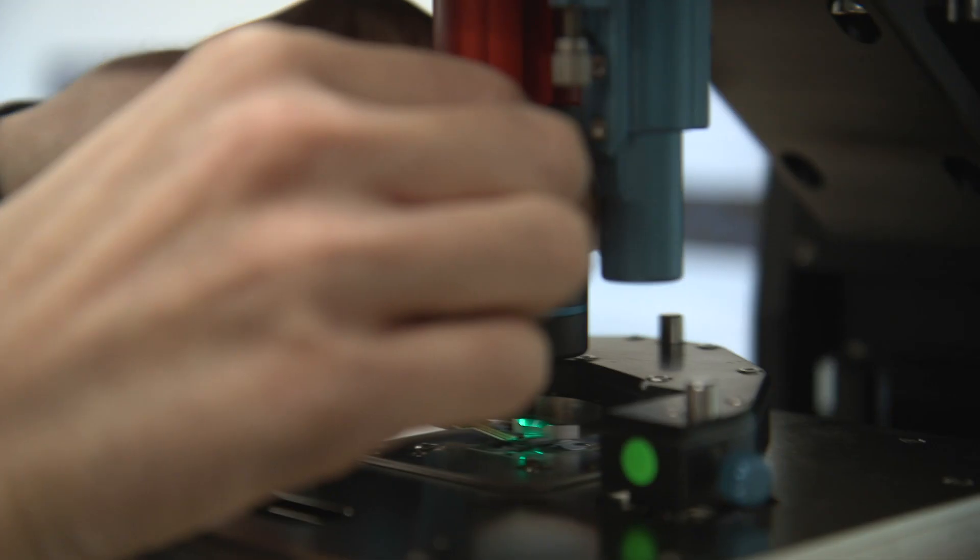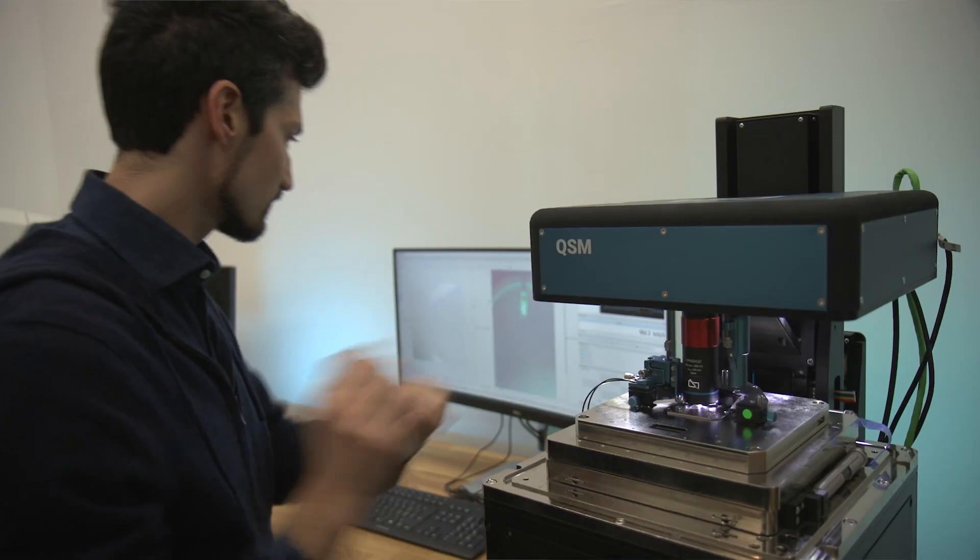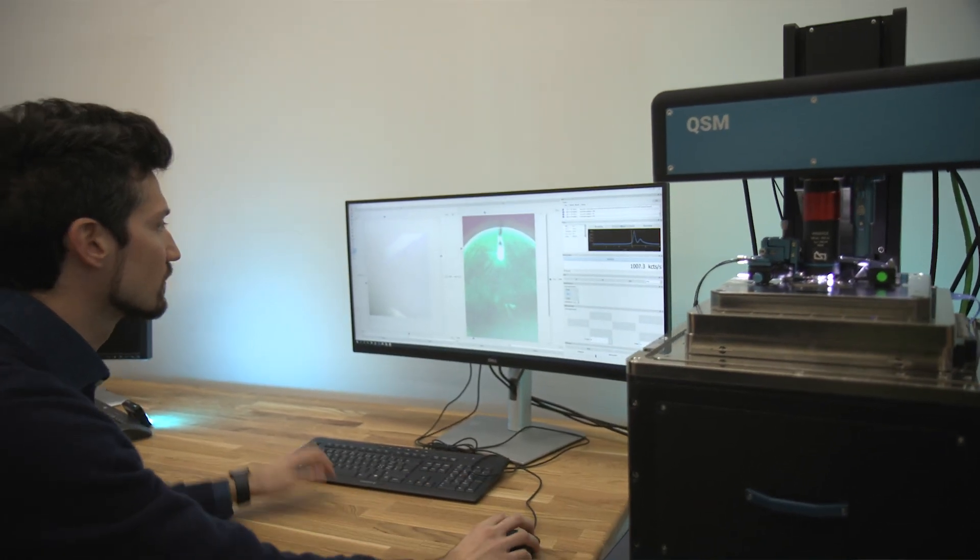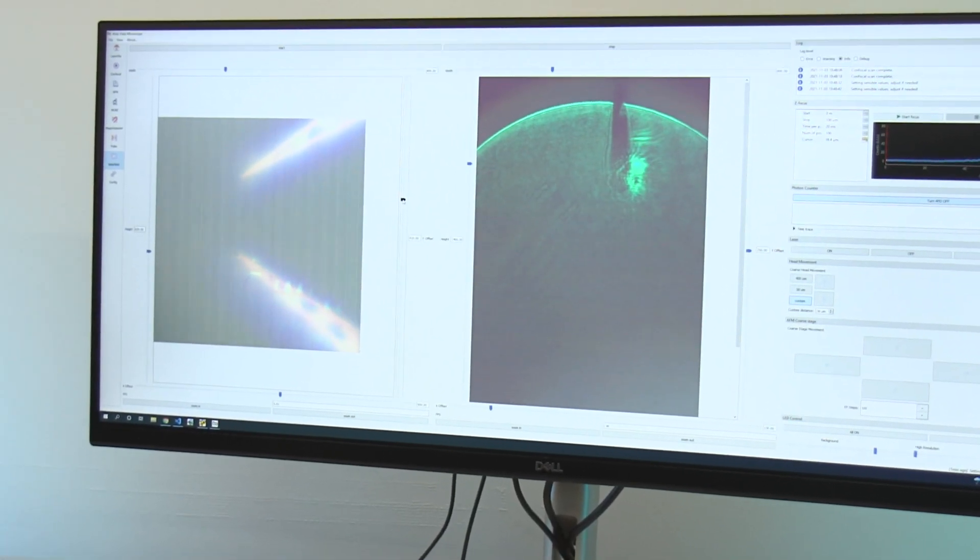Another unique feature of the QSM is really the optics set. We have put a lot of engineering and thought into designing custom optical elements that can maximize the collection efficiency of the fluorescence from the sensor itself. This impacts signal-to-noise that affects directly data quality and measurement time.